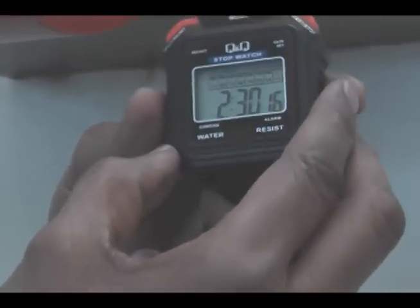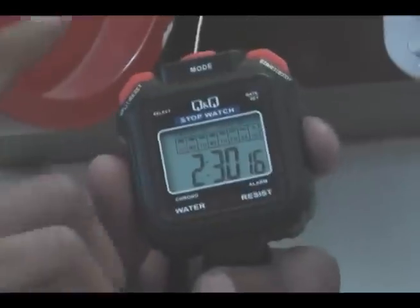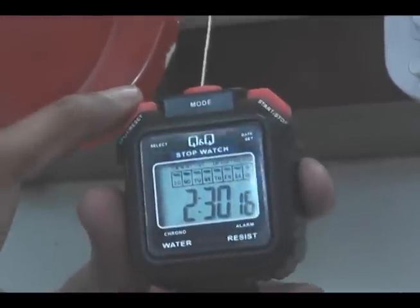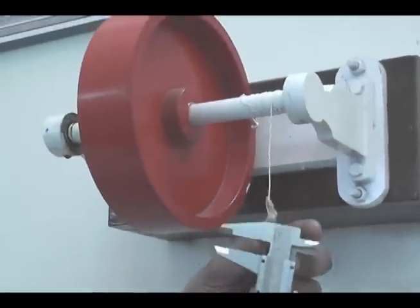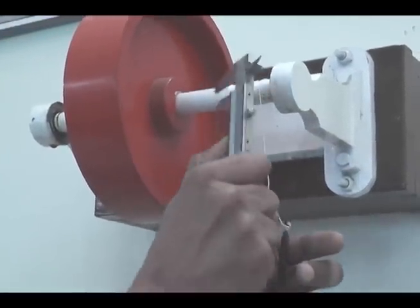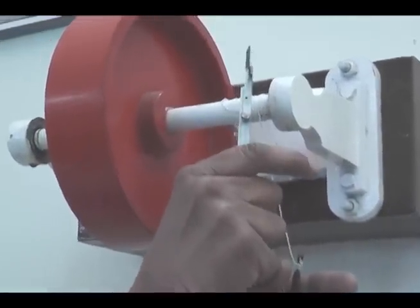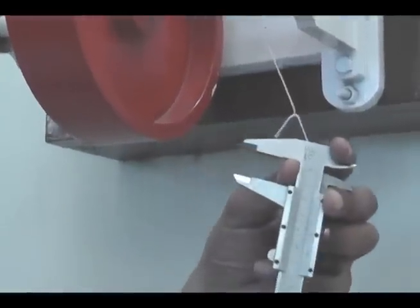And this is stopwatch. It depends upon which type of stopwatch you have and you have to check how to measure its time. And finally this vernier caliper to find its diameter, finally its radius. Then calculations.